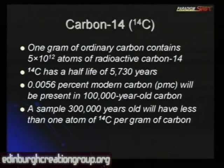If you have a sample of carbon supposed to be 300,000 years old, you'll have less than one atom of carbon-14 per gram. You could take the carbon from a diamond in an engagement ring and measure the carbon-14 in it — though you won't get your diamond back because they destroy it in the process. But nobody does that because we're told diamonds are millions of years old.